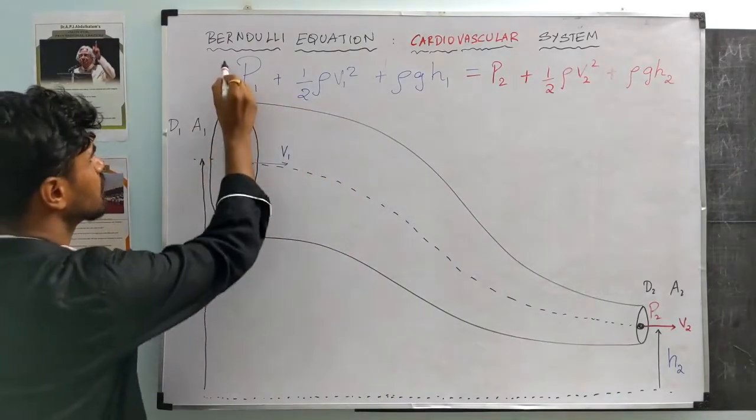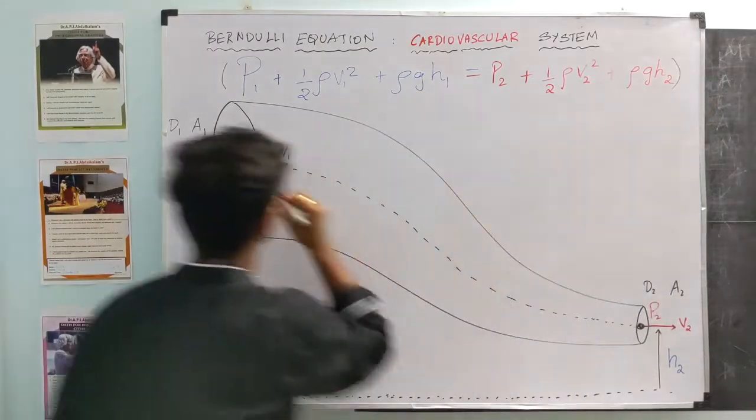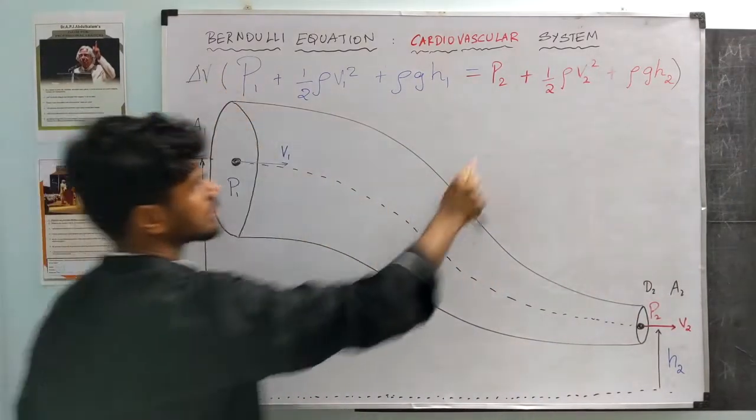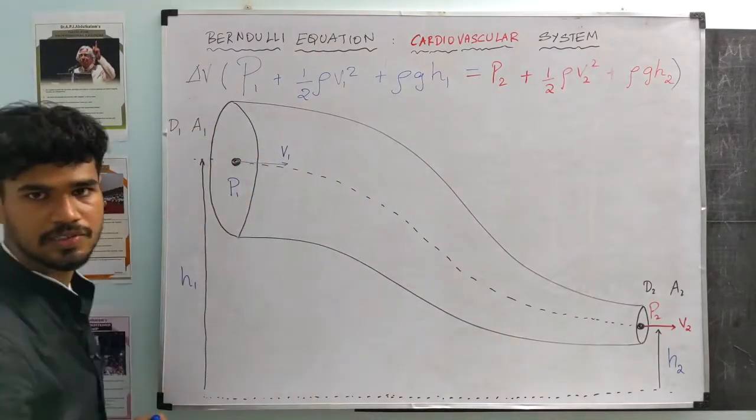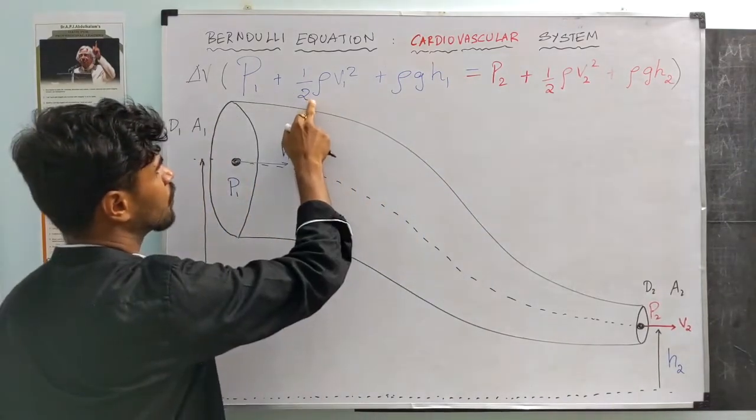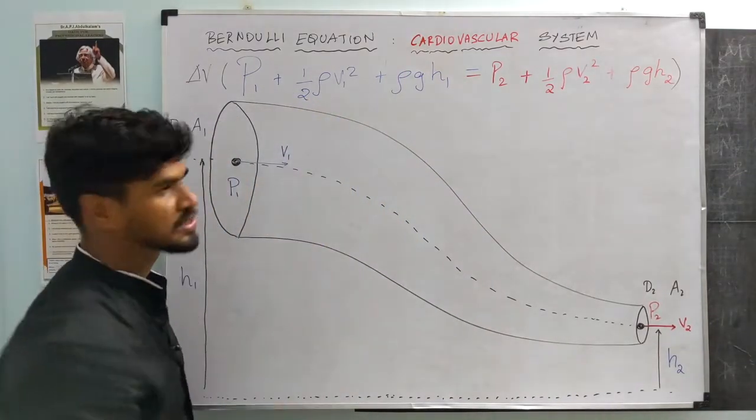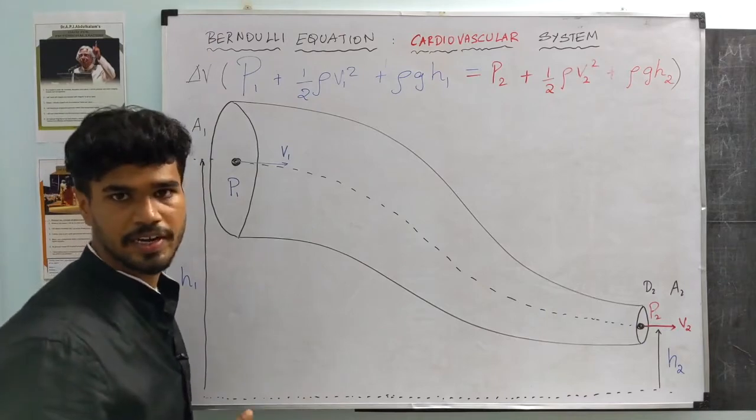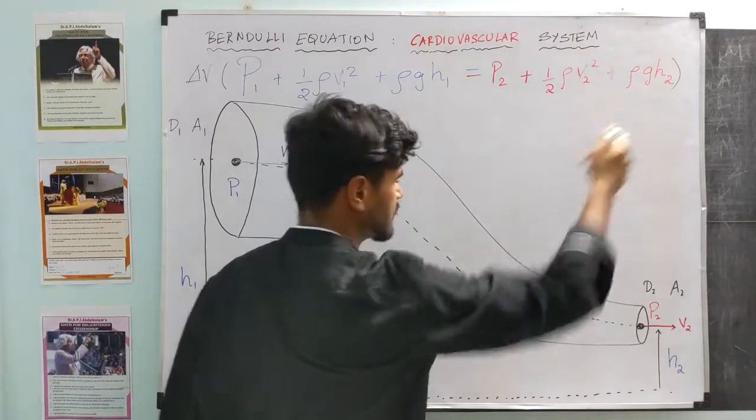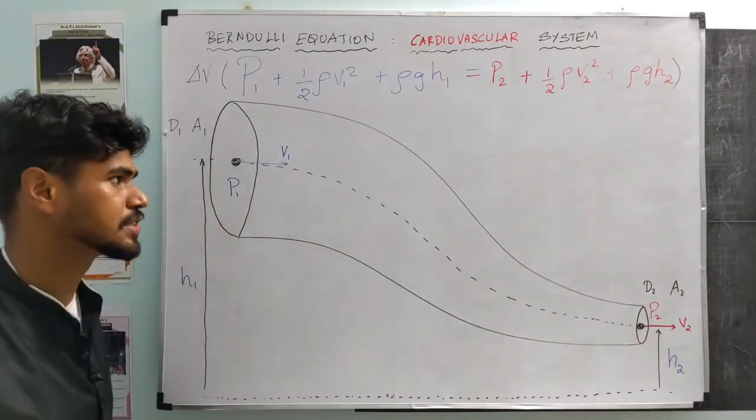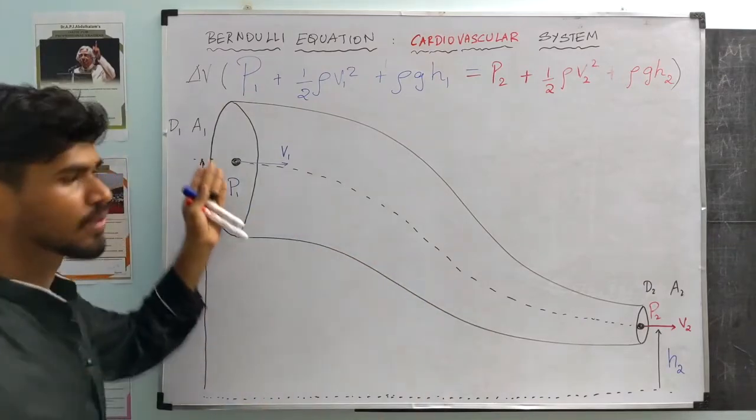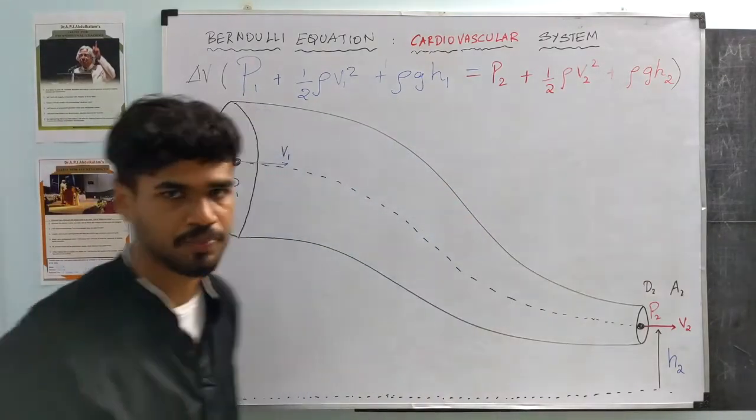Having said that, the Bernoulli equation says pressure at point 1 plus half rho V1 square, half rho velocity square plus rho G H. Rho is the density of fluid, G is acceleration due to gravity, that is a constant. Because it's a constant, if we were to estimate this term at this point, we will end up with P2 plus half rho V2 square plus rho G H2.